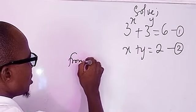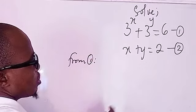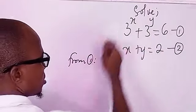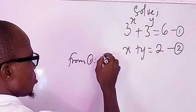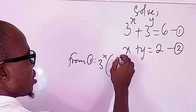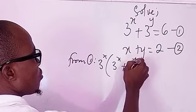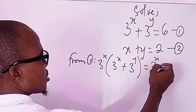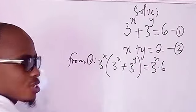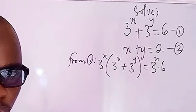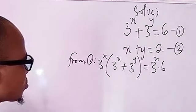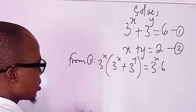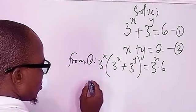So what I'm going to do from equation one is multiply through by three to the power of x. So we have three to the power of x multiplying the entire expression: three to the power of x plus three to the power of y equals three to the power of x multiplying six.